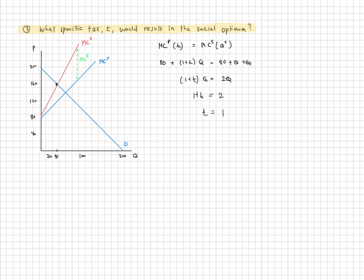And we see that the tax would have to be equal to 1. So this would be the specific tax that would help us find or help us move the private equilibrium to the socially optimal equilibrium.